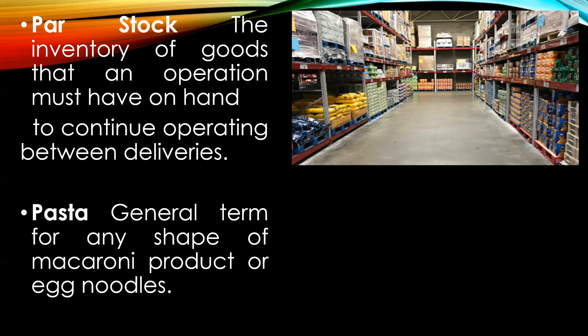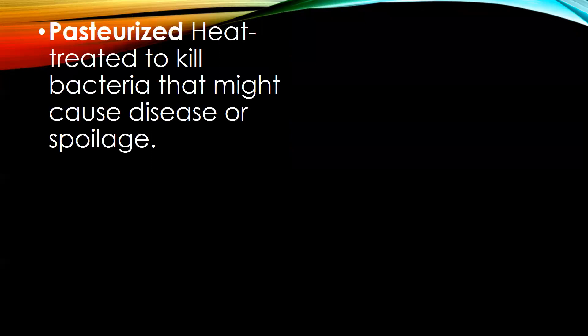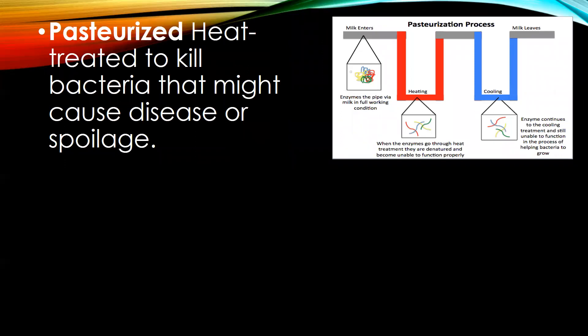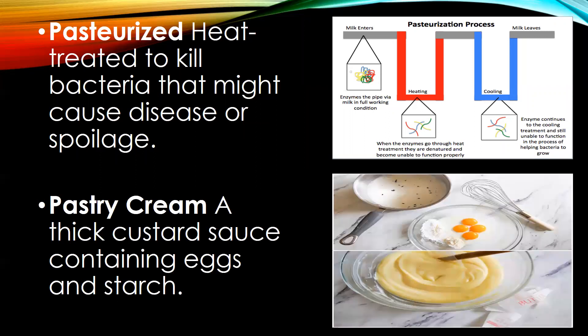The next word is pasta, a general term used for any shape of macaroni product or egg noodles. The next word is pasteurized, a heat treatment given to milk to kill bacteria that might cause disease or spoilage. Pastry cream is a thick custard sauce made with eggs and starch.